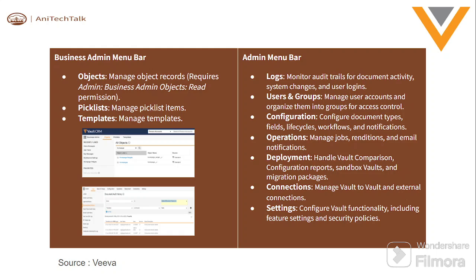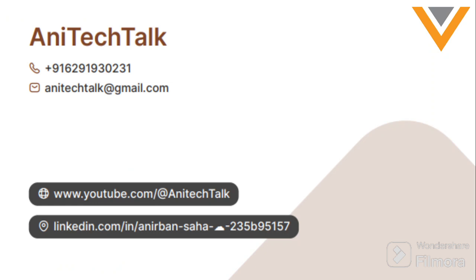With Admin access, a person can track the audit trail, manage user accounts, and configure document types, lifecycles, workflows, and notifications. They can manage email notifications, do deployments, perform enhancements, make configuration changes, create new report types, customize reports, and manage connections. Connections are basically Vault-to-Vault connections where one Vault is connected to another. The settings and whole configuration functionality, including feature settings, are all tasks of the System Admin team.